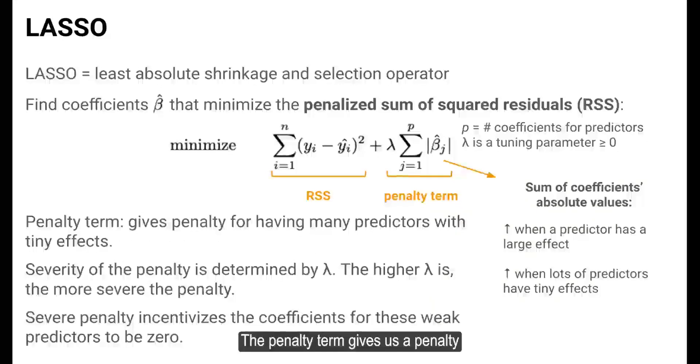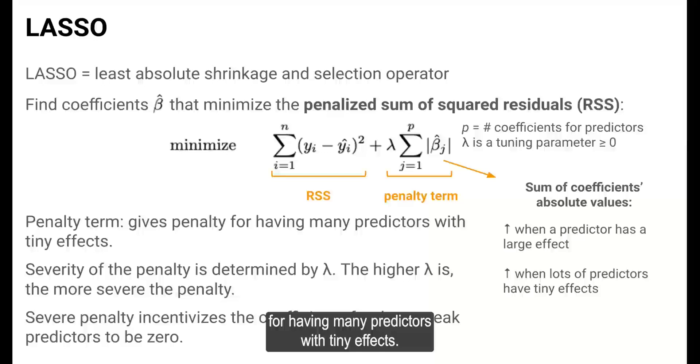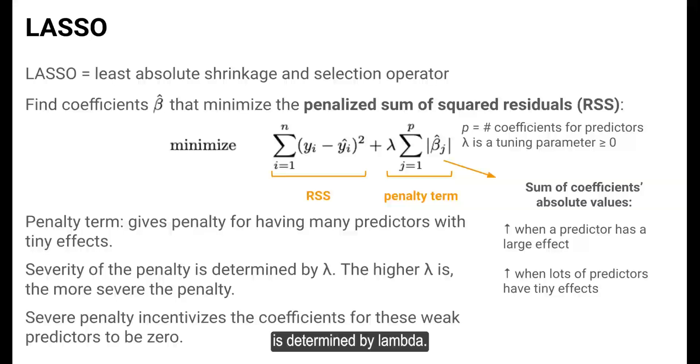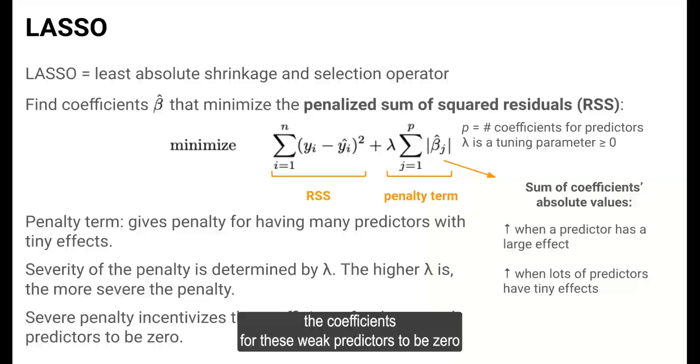The penalty term gives us a penalty for having many predictors with tiny effects. The severity of the penalty is determined by lambda. The higher lambda is, the more severe the penalty, and severe penalties incentivize the coefficients for these weak predictors to be zero.